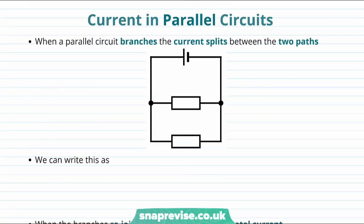Now let's talk about what happens to the current in a parallel circuit. When a parallel circuit branches, the current splits between the two possible paths. To see this on the diagram, let's call the current before the branching I, and the currents on each of the branches I1 and I2. Now we say that the current going into this point here must be the same as the current going out of that point,